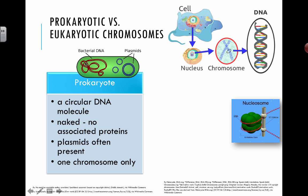Besides the regular circular DNA molecule, prokaryotic cells also have some plasmids. They're extra loops of DNA and they can divide independently. There's no guarantee that when the bacterial cell divides, all the plasmids will be split evenly or even copied. A lot of the antibiotic resistance found in bacterial cells actually comes from genes that are inside the plasmids.